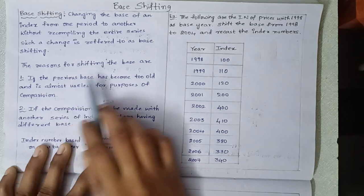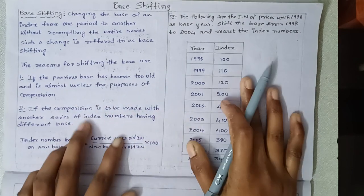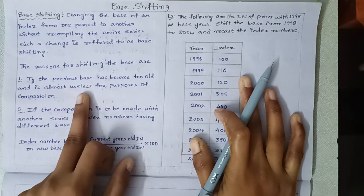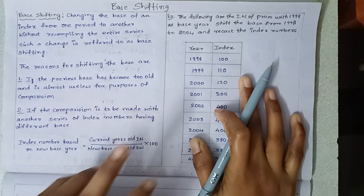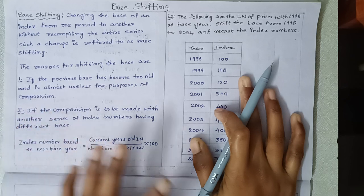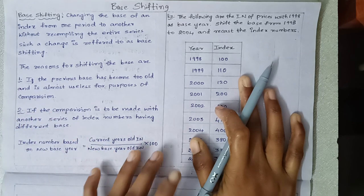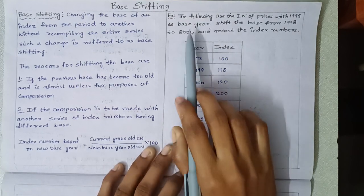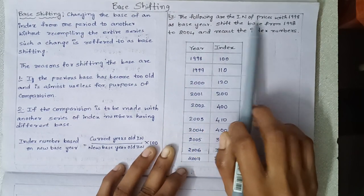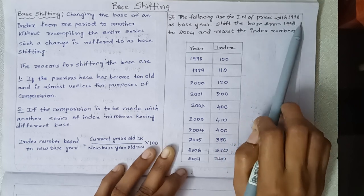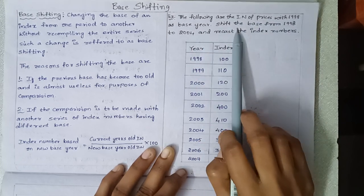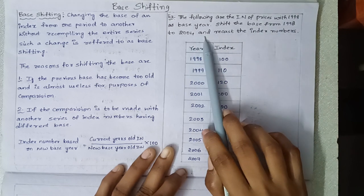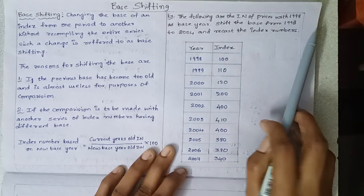The reasons for shifting the base are: if the previous base has become too old and is almost useless for the purpose of comparison. For example, the following are the index numbers of prices with 1998 as base year. Shift the base from 1998 to 2004 and recast the index numbers.